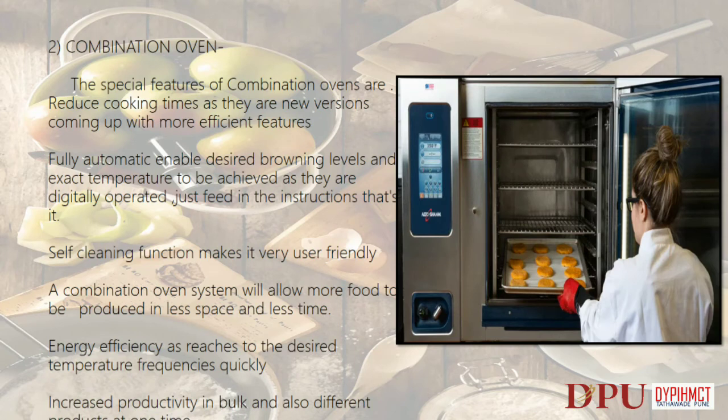Combination oven: special features include reduced cooking times as new versions come with more efficient features. Fully automatic, enabling desired browning levels and exact temperatures to be achieved as they are digitally operated — just feed in the instructions. Self-cleaning function makes it very user friendly. A combination oven system allows more food to be produced in less space and less time. Energy efficient as it reaches the desired temperature quickly. Increased productivity in bulk and for different products at one time.